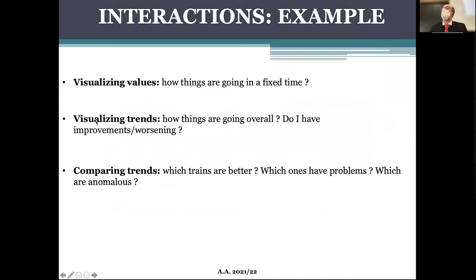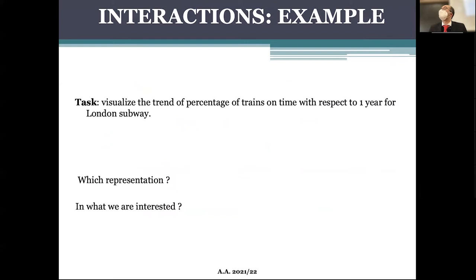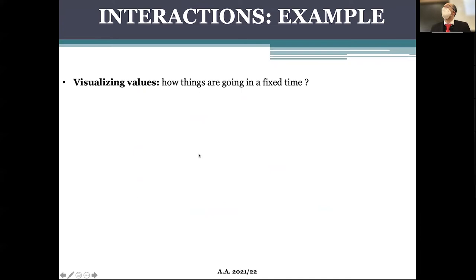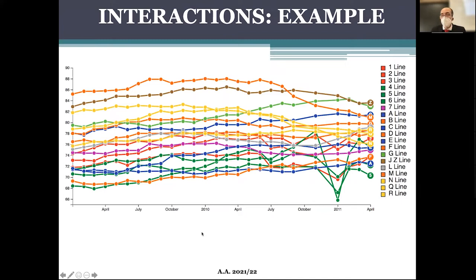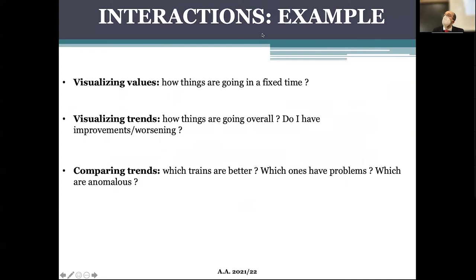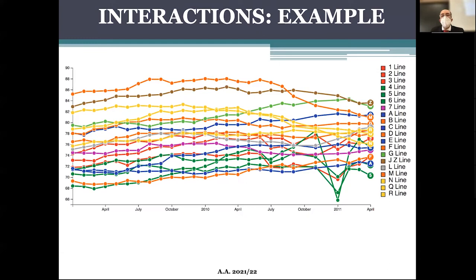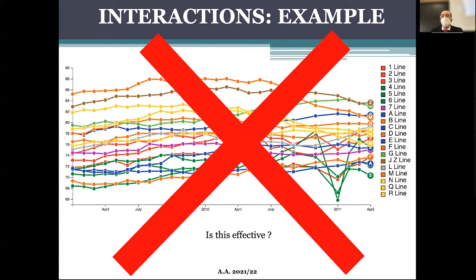These lines represent performance — the efficiency of how often trains are on time according to the timetable. With a static chart, we can visualize trends in some way but have great difficulty obtaining exact values of these performances. The comparison task is very difficult except for trivial cases. This is exactly an example where even a contained number of data on a well-defined set of elements with well-defined tasks is very difficult to support statically — this chart statically does not work.